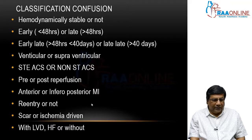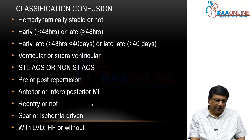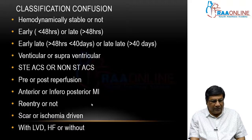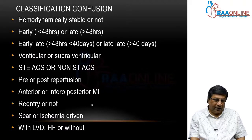What is the site of MI — anterior MI or inferoposterior MI? What is the mechanism of arrhythmia — re-entry arrhythmia or automatic arrhythmia? Or whether it is a scar-induced arrhythmia or ischemia-driven arrhythmia? And what is the basic structural heart disease — whether LV dysfunction or heart failure is present, or whether the patient is having arrhythmia in the presence of normal LV function.